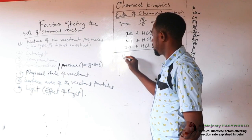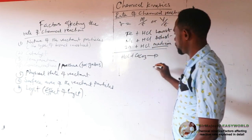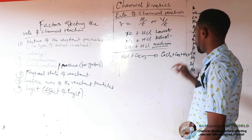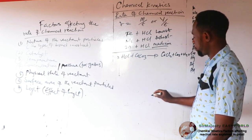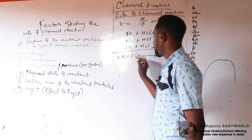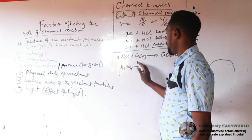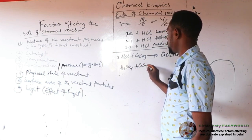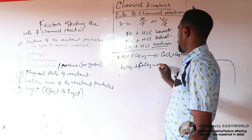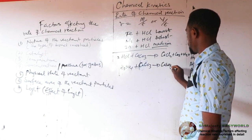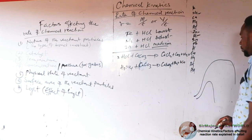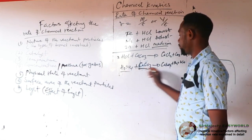For the reaction: HCl + CaCO₃ → CaCl₂ + CO₂ + H₂O, the reaction rate will obey the normal rate curve — it grows, stabilizes, then declines due to consumption of reactants. But if you replace HCl with H₂SO₄, the reaction CaCO₃ + H₂SO₄ → CaSO₄ + H₂O + CO₂ will start and immediately fall rapidly, because calcium sulfate is insoluble.